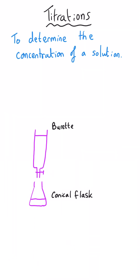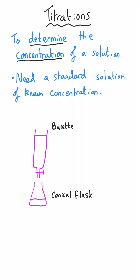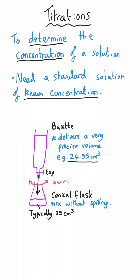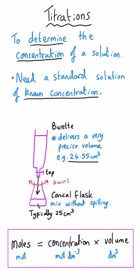Titrations are used to determine the concentration of a solution. In order to do this we need a second solution whose concentration we already know. We add one solution from a burette, which can deliver a very precise volume, and mix it in a conical flask because the shape allows us to swirl it without spillages. Provided we know the concentration of one solution, we can use moles equals concentration times volume to find the other.